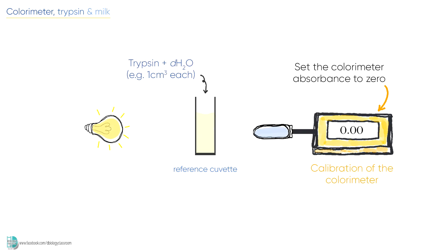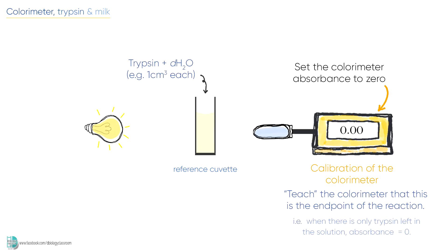We do this to teach the colorimeter that this is the endpoint of the reaction. When there is only trypsin left in the solution, we consider this as zero absorbance.